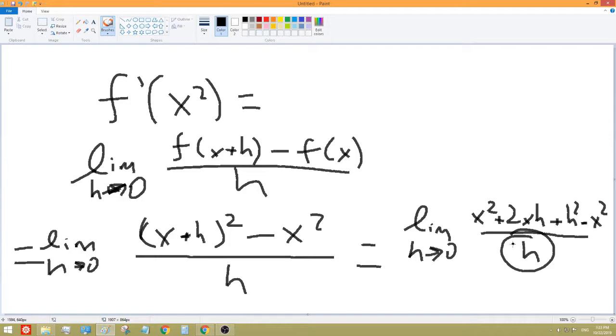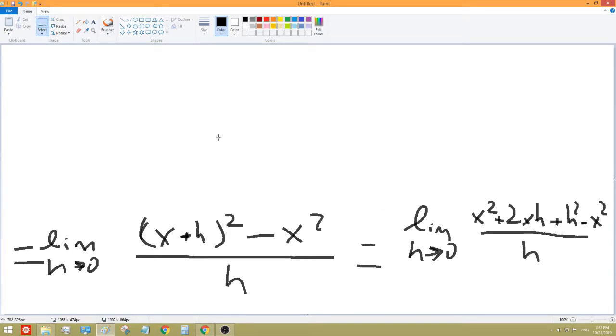So, still can't do it because H is on the bottom. So, we're going to try to fix that. So, we see here there's two X's, one positive X squared, one negative X squared. So, we can just do 2XH, limit as H approaches 0, plus H squared over H.